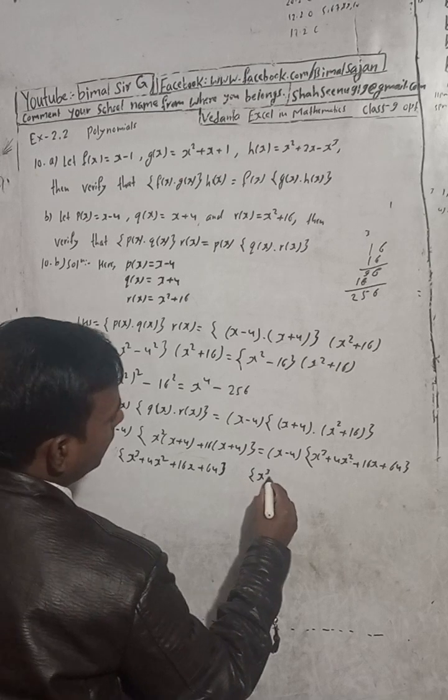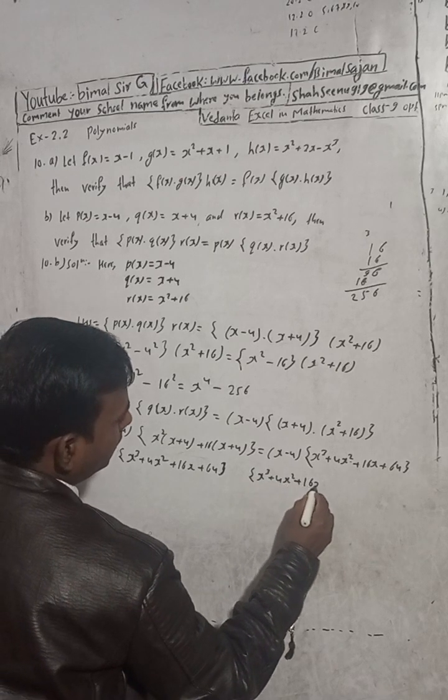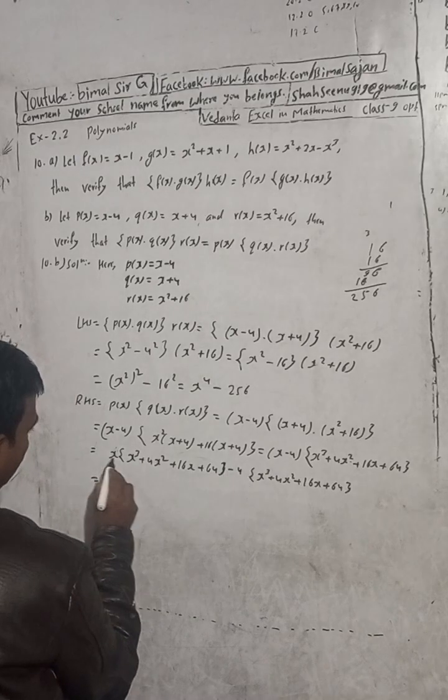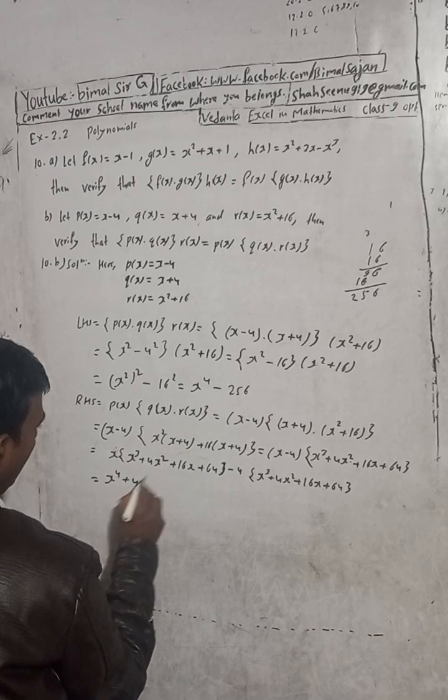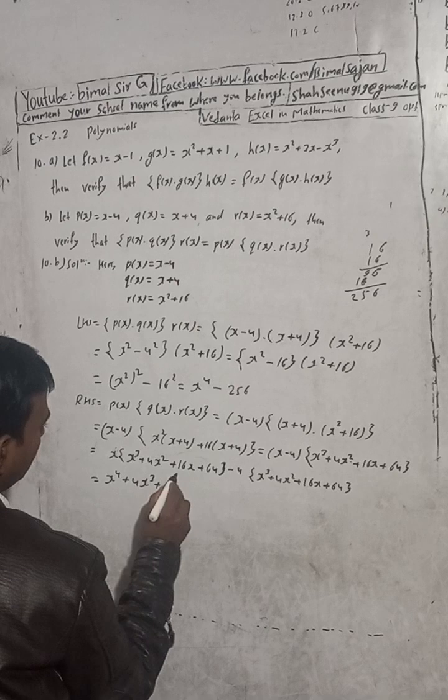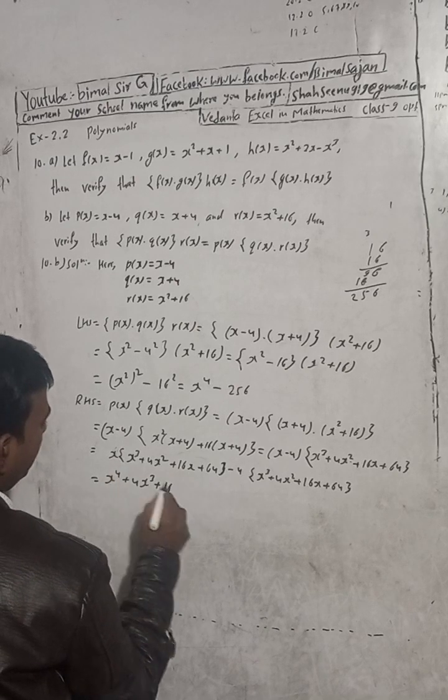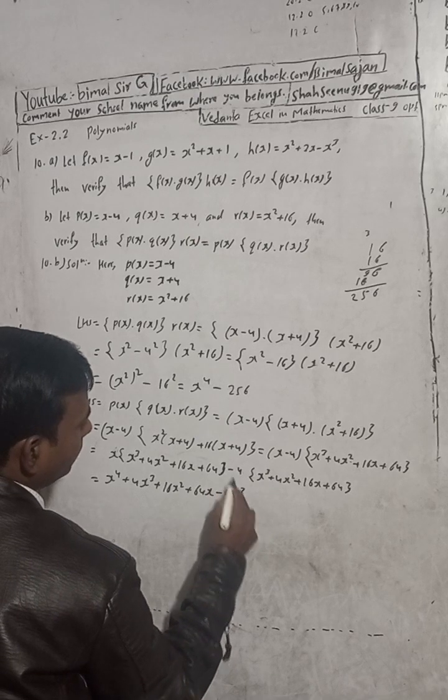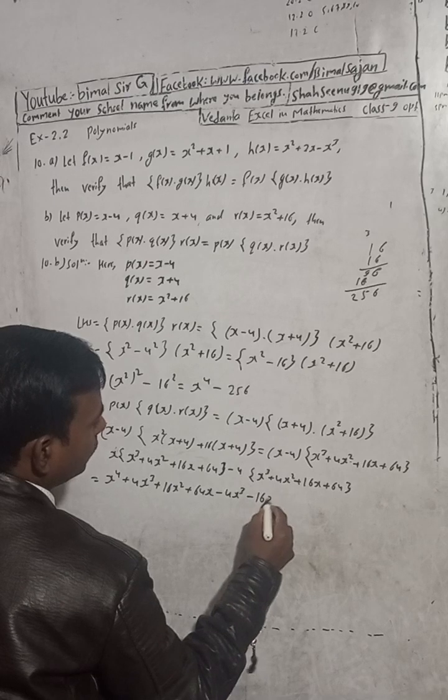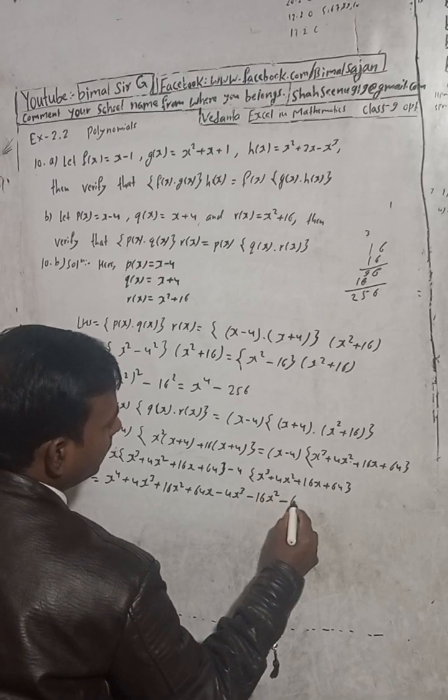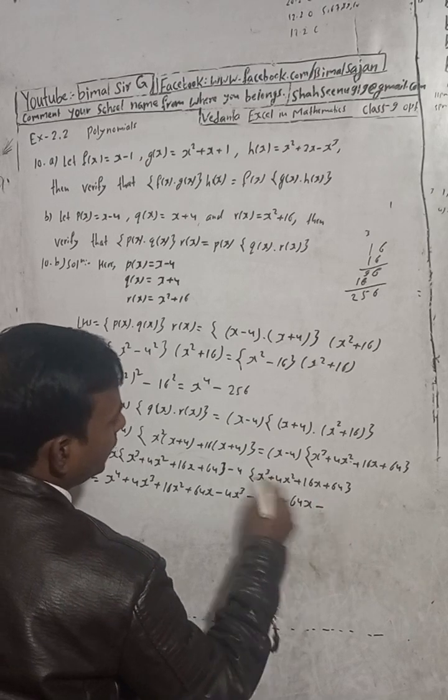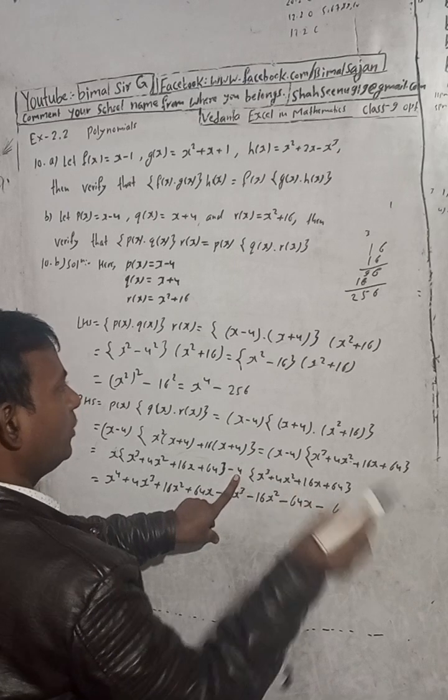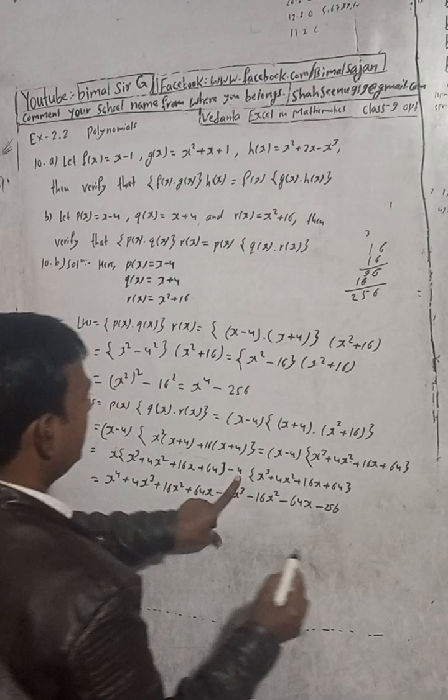X cube plus 4x square plus 16x plus 64. One time, give some space, and next time again: x cube plus 4x square plus 16x plus 64. And this you have to write here x here and minus 4 here. Now when you multiply this: x into x cube is x to the power 4.